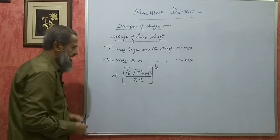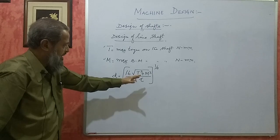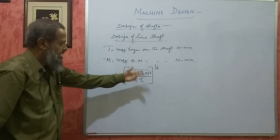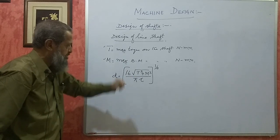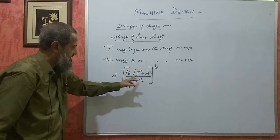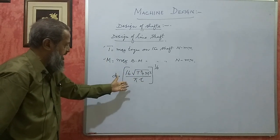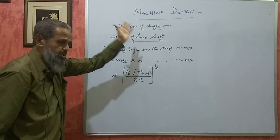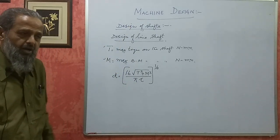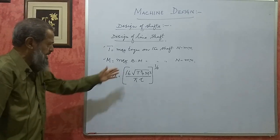If you neglect bending moment — that is, if you consider it to be a machine shaft, bending moment is negligible, means M becomes zero. If M becomes zero, this becomes √(T²) = T, so the formula reduces to D = (16T / (π × τ))^(1/3), which is the formula used in design of a machine shaft, assuming maximum shear stress theory.